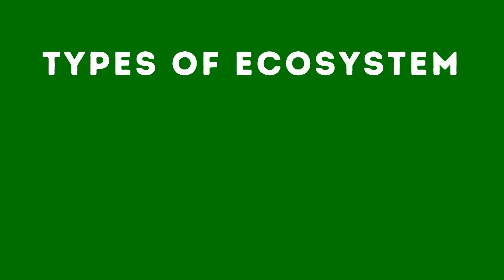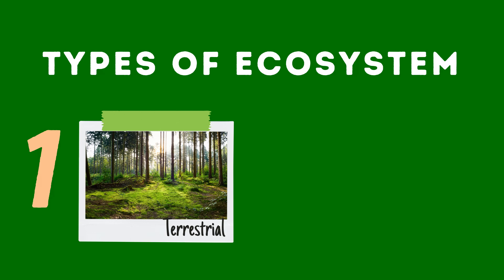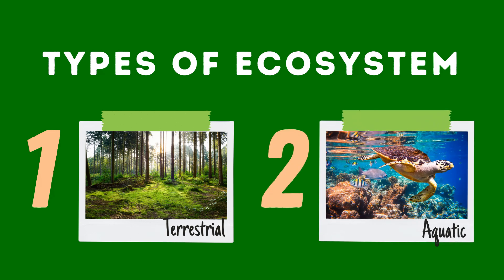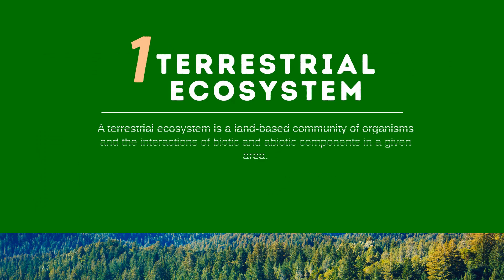Types of ecosystem. An ecosystem can either be small or big, just like an ocean. Generally we have two types of ecosystem: first is terrestrial ecosystem, and second is aquatic ecosystem. Terrestrial ecosystem consists of land — it's a land-based community of organisms and their interaction with the biotic and abiotic factors.